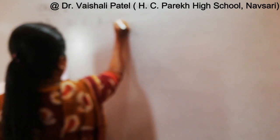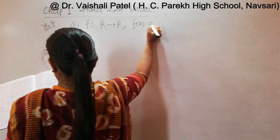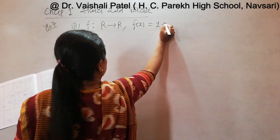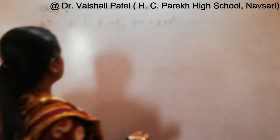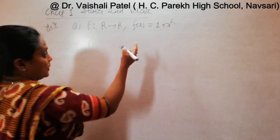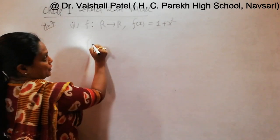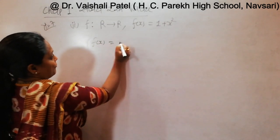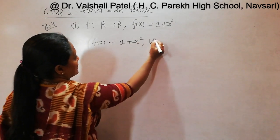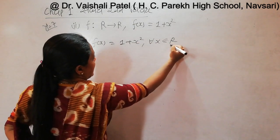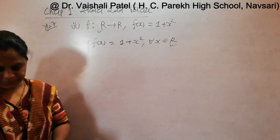So, f from R to R, f of x is equal to 1 plus x squared, for all x belonging to capital R. We will check this out.